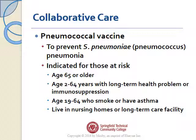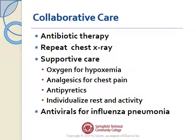Because of her gram stain results, she probably has Streptococcus pneumoniae. As nurses, one of the things we can do to help our patients — especially those over age 65 — is to promote getting the pneumonia vaccine. The pneumonia vaccine specifically prevents Streptococcal pneumococcal pneumonia. It's indicated for patients 65 or older, younger than 65 with long-term health problems or immunosuppression, adults 19 to 64 who smoke or have asthma, and especially recommended for patients who live in nursing homes or long-term care facilities.